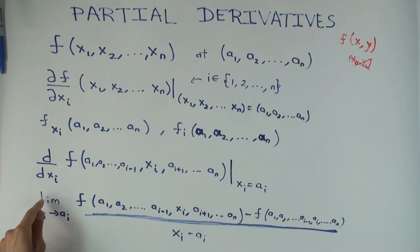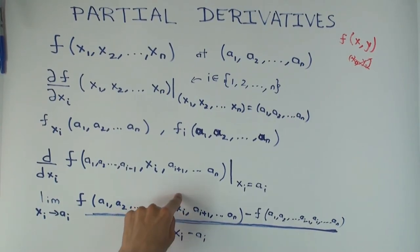Now if you want, you could also write this in the limit h approaches zero. In that case, xi would become ai plus h and the denominator would just become h. Okay.